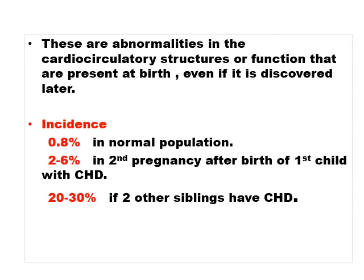Congenital heart disease refers to abnormalities in cardiac or circulatory structure or function present at birth, even if discovered later. The incidence is 0.8% in the normal population. With each subsequent pregnancy, incidence increases — in the second pregnancy it becomes 2 to 6%. If the first child is affected, incidence increases to 20 to 30% if the family has two other siblings with congenital heart disease.